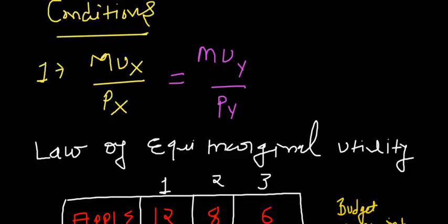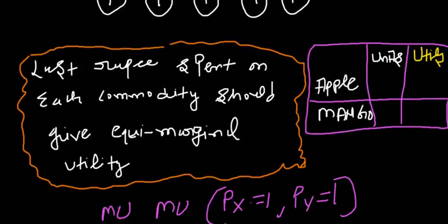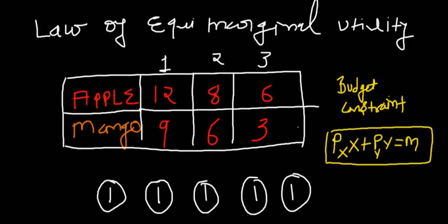The law of equi-marginal utility suggests that the last rupee spent on each commodity should give equal marginal utility. For example, if you are spending 5 rupees on two commodities — apple and mango — the utilities from each unit of consumption are: apple gives 12 utils for the first unit, 8 for the second, and 6 for the third; mango gives 9 utils for the first unit and 6 for the second.